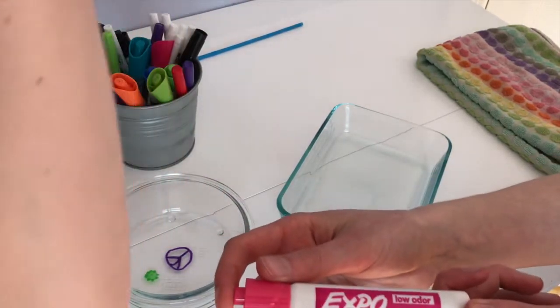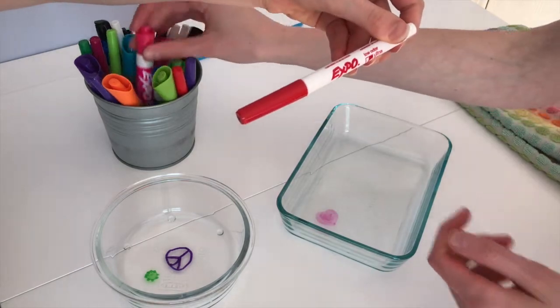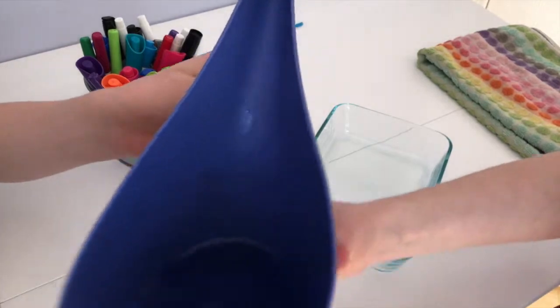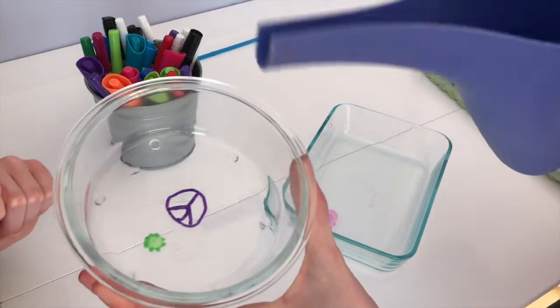But the Expo markers like these ones work really, really well for this. So the Expo dry erase chisel tip markers. Yes, we also have the small Expo markers and those work as well. So you want to pour it off to the side and let it lift up your shape.